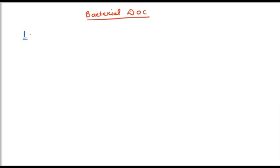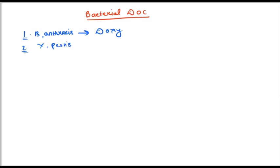The first bacteria is Bacillus anthracis. The drug of choice for Bacillus anthracis is doxycycline. The second one is Yersinia pestis, and the antibiotic for that is also doxycycline.